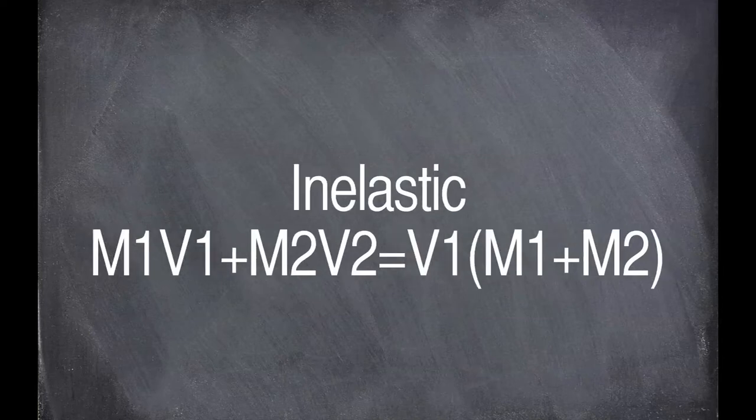In an inelastic equation, the first half is the same, but in the second half you multiply the velocity of the two objects together by the sum of the two objects' mass.